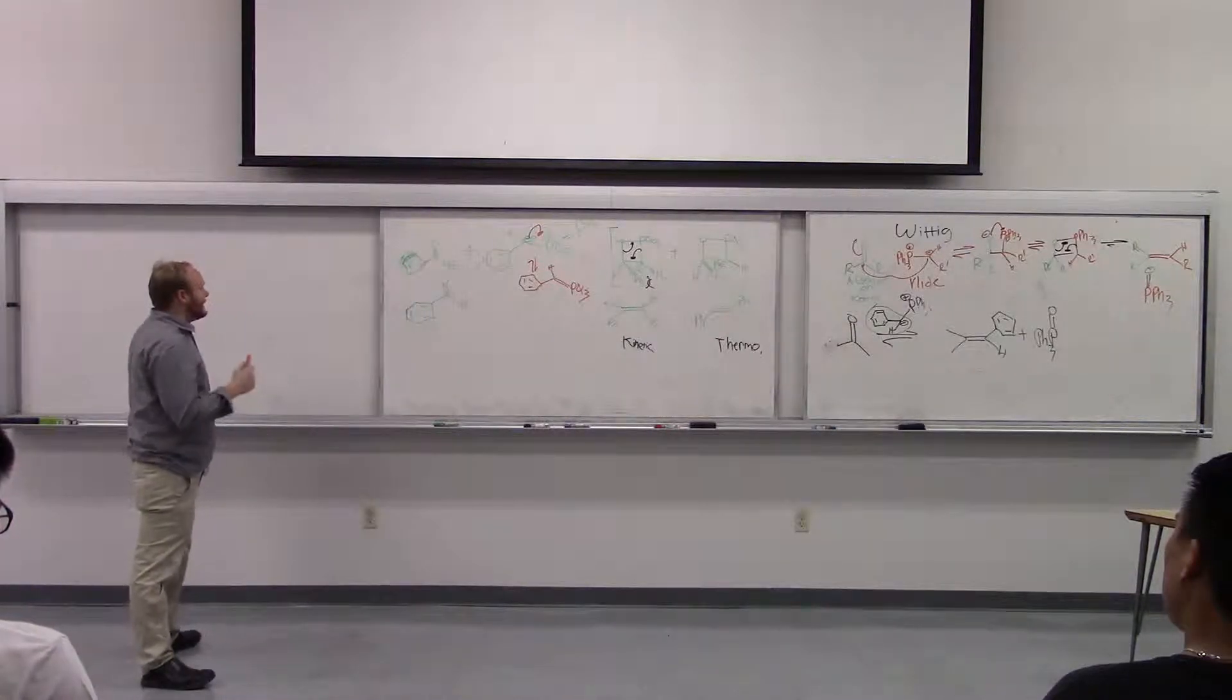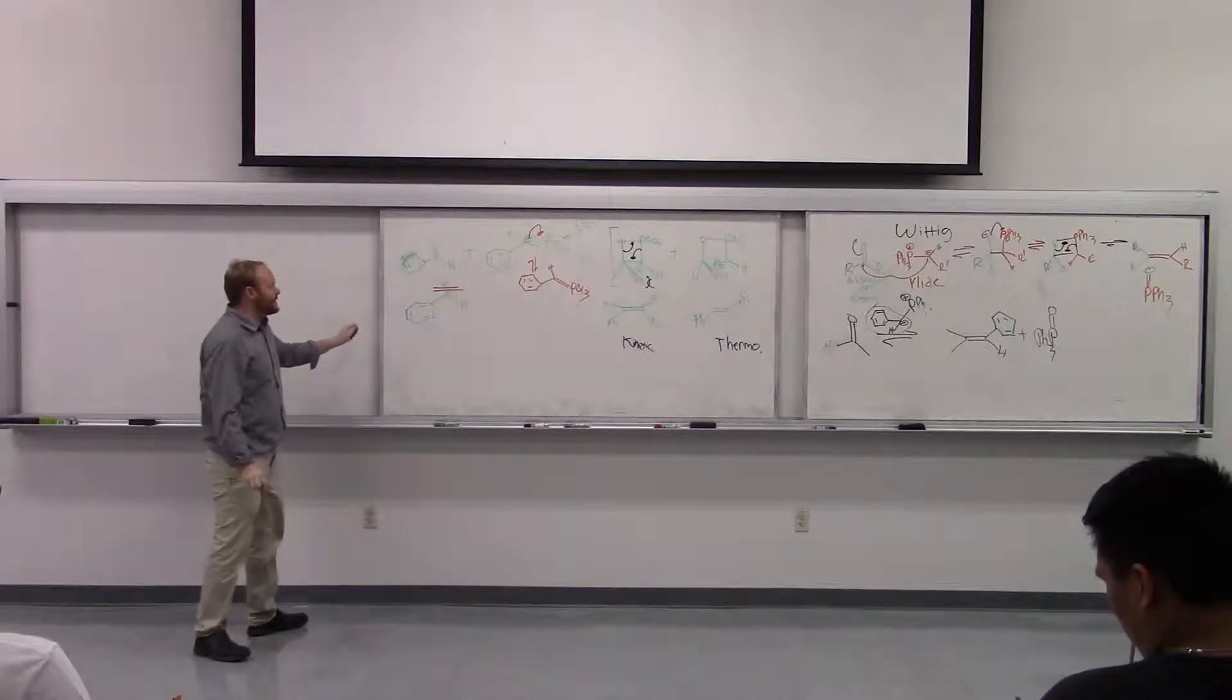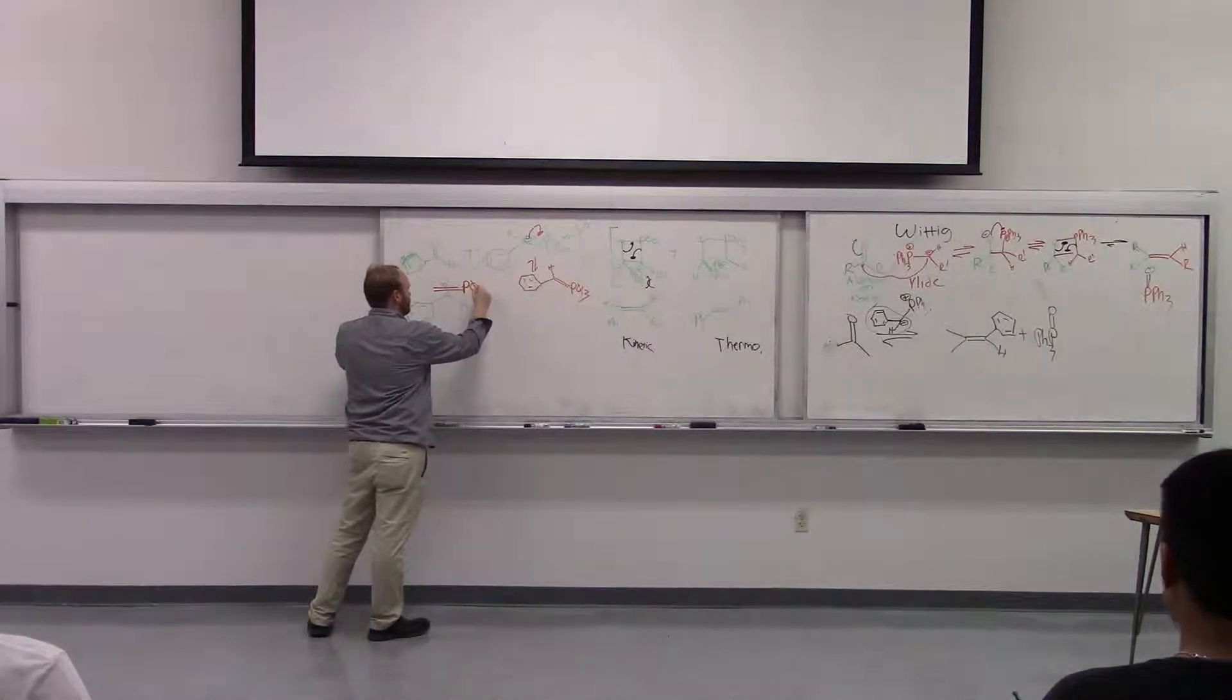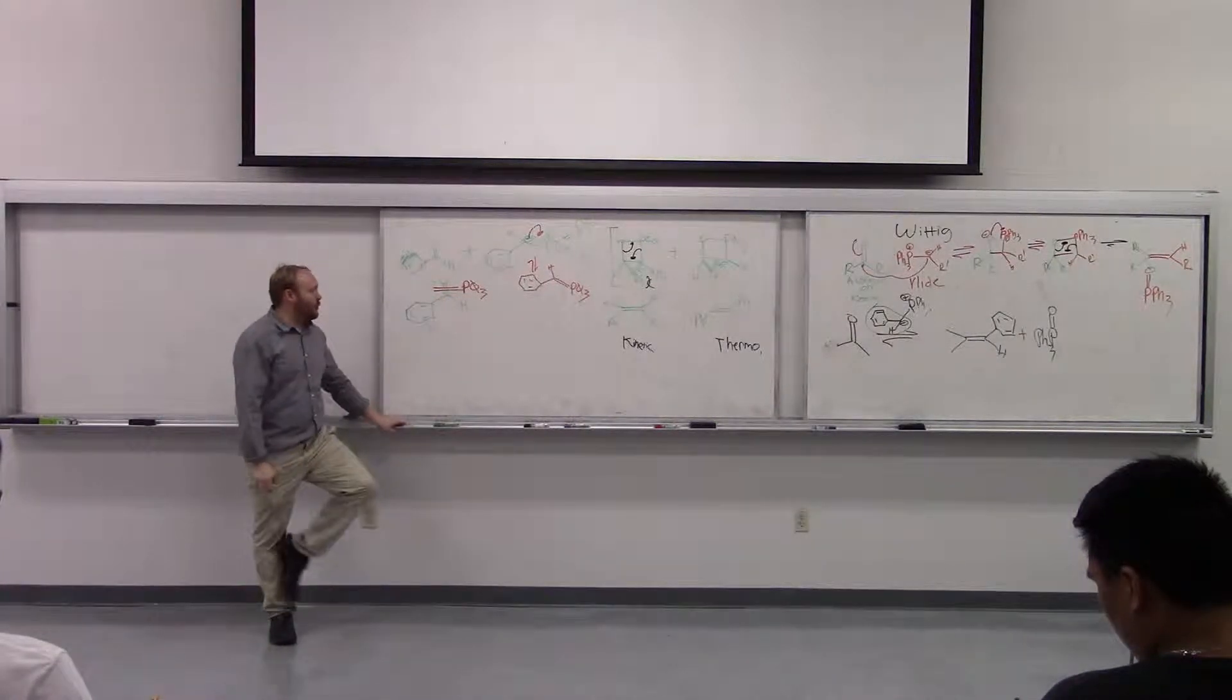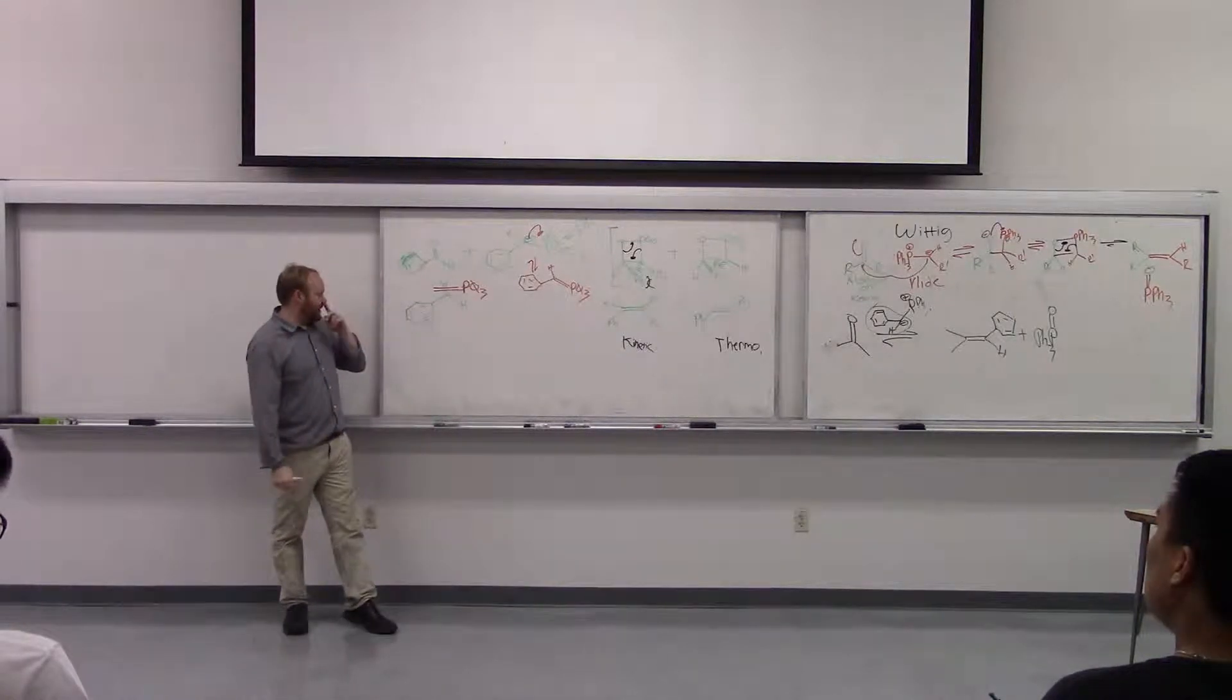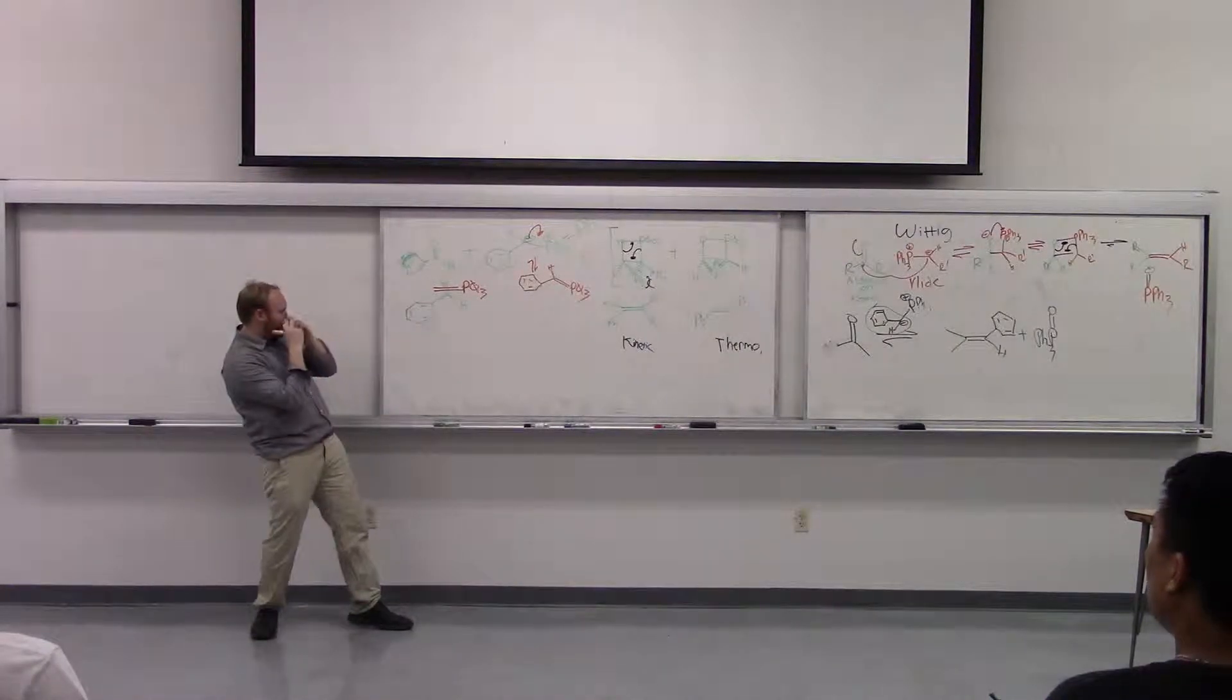And so what that means right now is this is going to want to attack with the phosphorus as far away from the big phenyl group as possible. So it's going to attack so that the phosphorus is pointing away from the sterics. I guess you would call this an exo transition state because the phosphorus is pointing away from the sterics of the aldehyde. I just made that exo transition state term up, but I hope you guys see what I'm talking about. The sterics are pointing away.